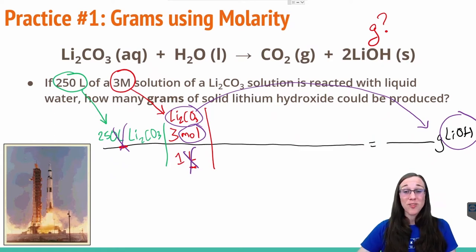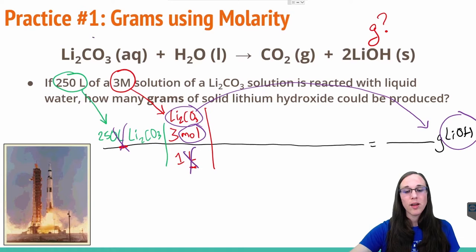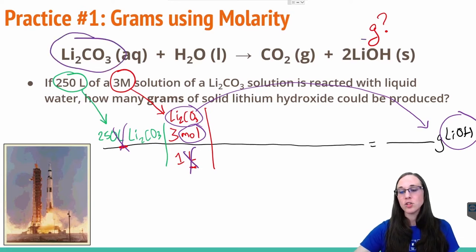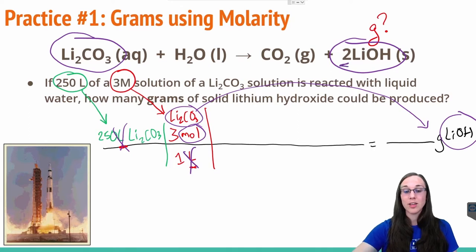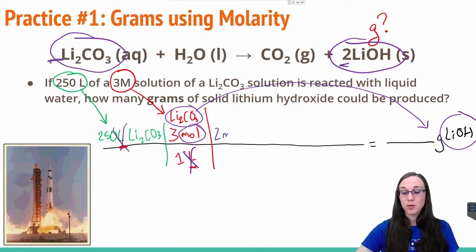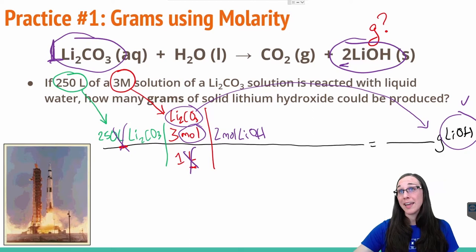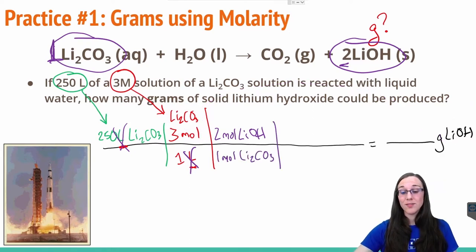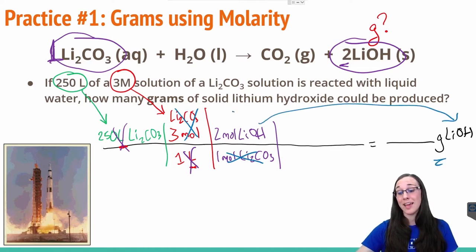We find the mole ratio value by looking back at our balanced chemical equation. For every one lithium carbonate, we have two lithium hydroxides in terms of moles — that first value in front. The goal mole goes on top, so that would be two moles of lithium hydroxide, since that's our goal unit. And the one mole — the invisible one implied in front of lithium carbonate — will go in the bottom. Now we see that the moles of lithium carbonate cancel, and we're finally left with the correct chemical, but not the correct unit yet.